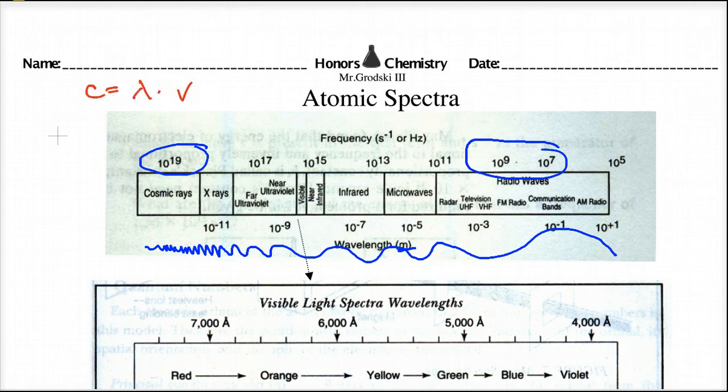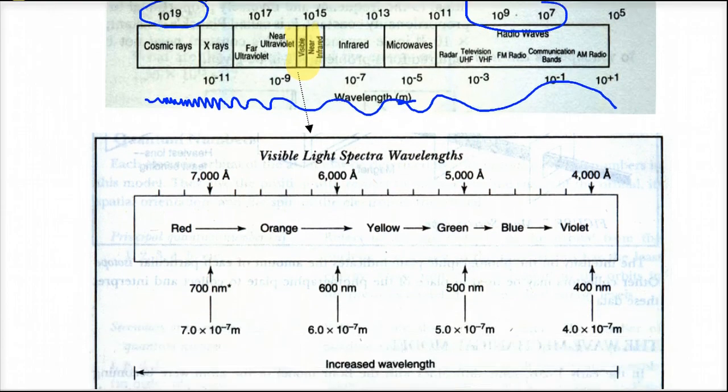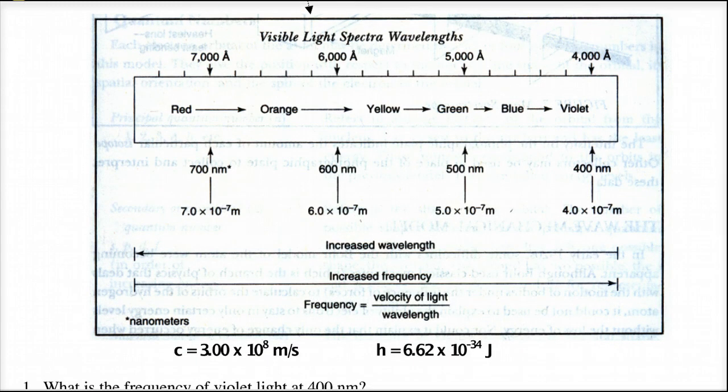C equals wavelength times the frequency. Now the last question was, what part of the electromagnetic spectrum does that red laser come from? Well it comes from the visible region. Now specifically, if I remember correctly, it was 7.79 times 10 to the negative 7 meters. So if you look carefully for that value, 7.0, well 7.79 is over here. Boy, we are in the red part of the spectrum.